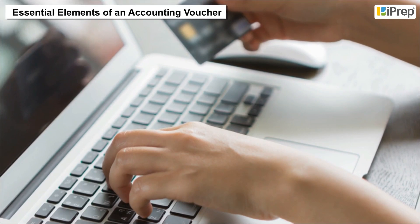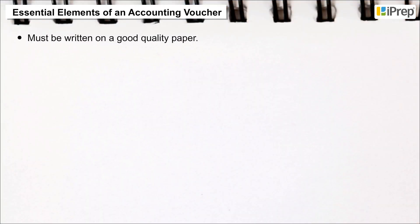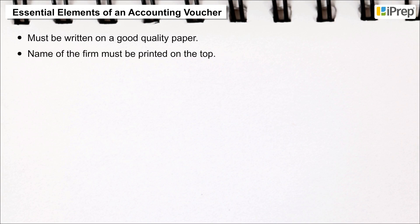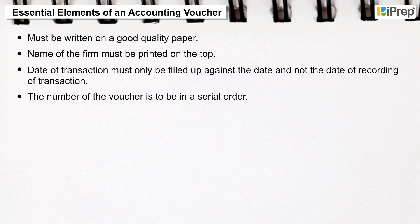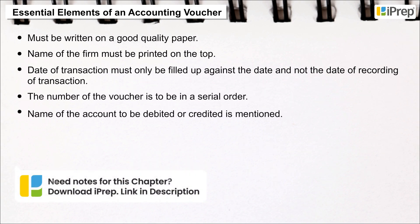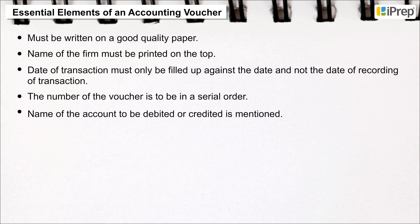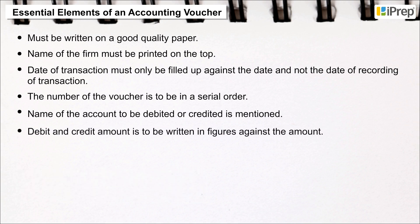The essential elements of an accounting voucher are: it must be written on good quality paper; the name of the firm must be printed at the top; the date of the transaction must be filled in — not the date of recording; the voucher number must be in serial order; and the name of the account to be debited or credited must be mentioned, with debit and credit amounts written in figures.